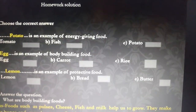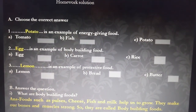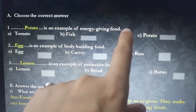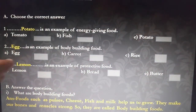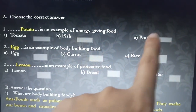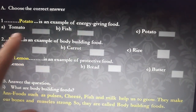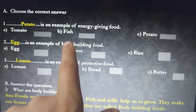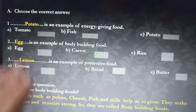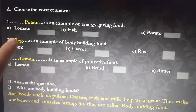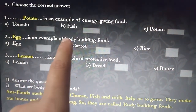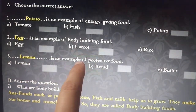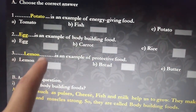Now Homework Solution, Question A: Choose the correct answer. Which is an example of energy giving food — Tomato, Fish, or Potato? The right answer is Potato. Second: which is an example of body building food? Answer is Egg. Third: which is an example of protective food? The answer is Lemon.